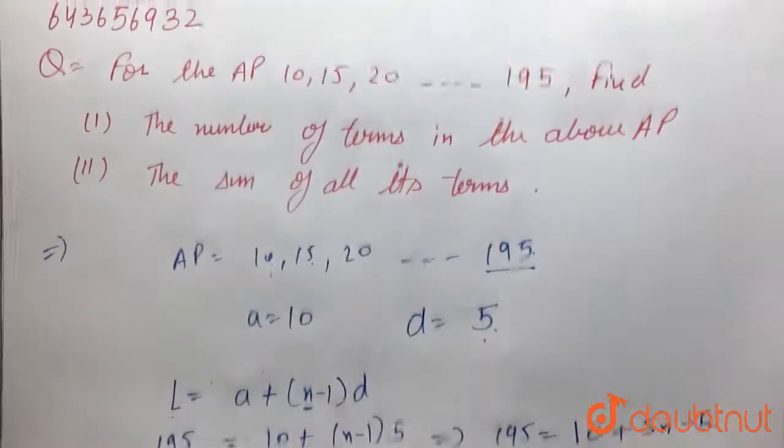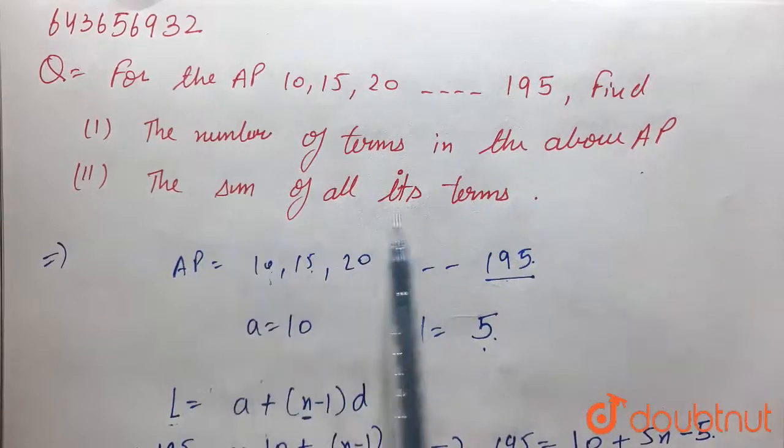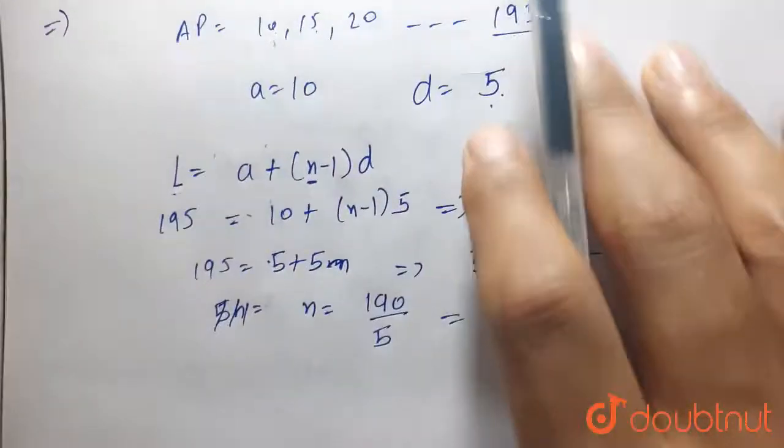Here the number of terms in the above AP is 38. Now we have to find the sum of all its terms. That means we have to find the sum of 38 terms.